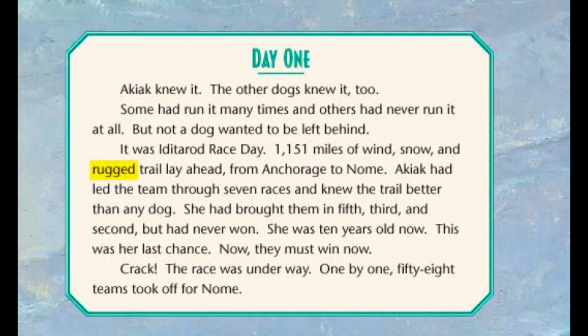Akiak. Day one. Akiak knew it. The other dogs knew it too. Some had run it many times and others had never run it at all. But not a dog wanted to be left behind. It was Iditarod race day. 1,151 miles of wind, snow, and rugged trail lay ahead — from Anchorage to Nome. And rugged means rocky and uneven. Akiak had led the team through seven races and knew the trail better than any dog. She had brought them in fifth, third, and second, but had never won. She was 10 years old now. This was her last chance. They must win now. Crack! The race was underway. One by one, 58 teams took off for Nome.